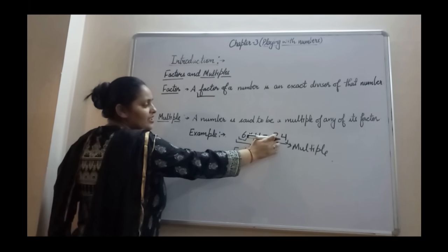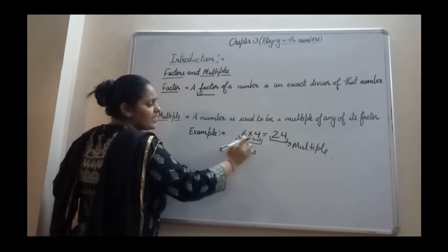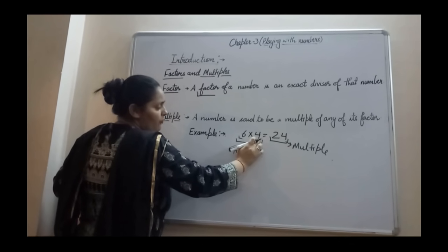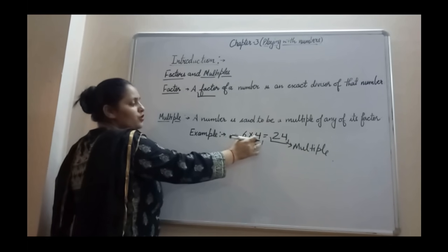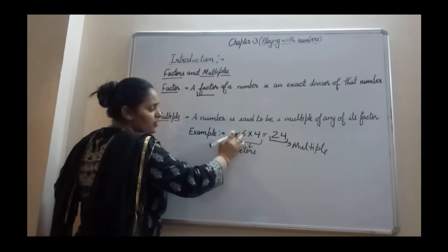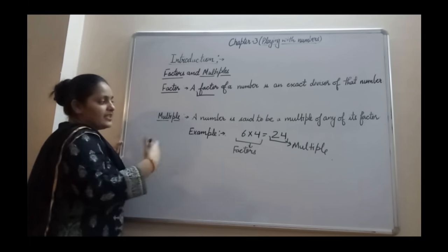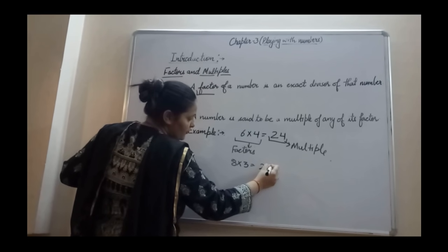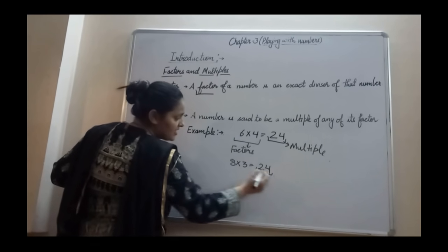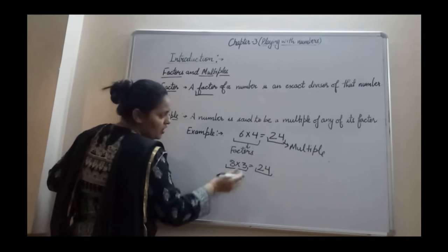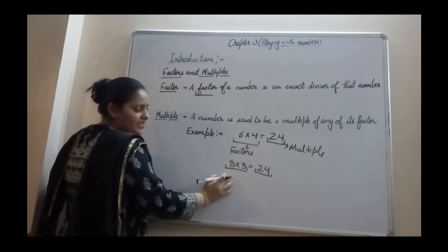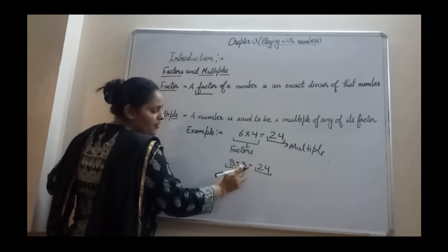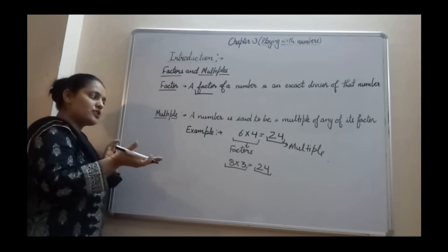So we can say that 6 and 4 are factors of 24, or you can say the multiple of 6 and 4 is 24. Now taking another example: if I multiply 8 by 3, your multiple is also 24. It means the multiple is the same but the factors are different. So 24 is having two more factors, that is 8 and 3. So 8 is also a factor of 24 and 3 is also a factor of 24.